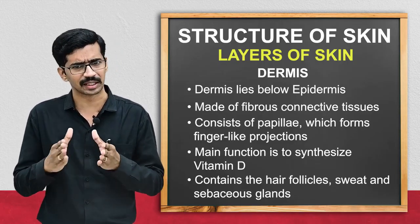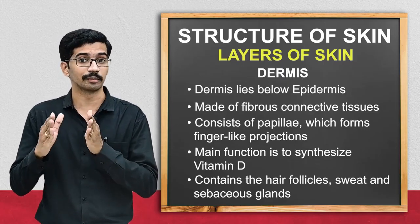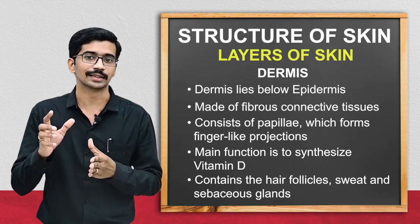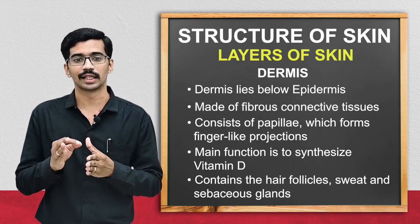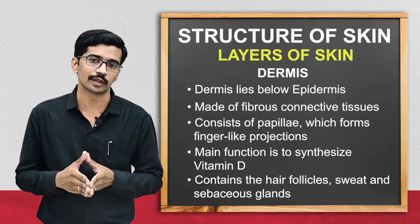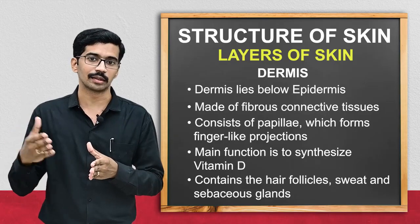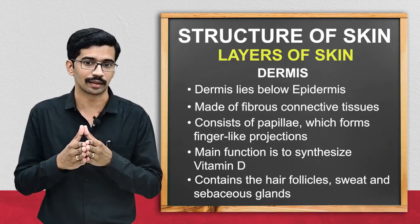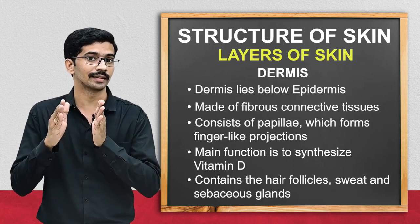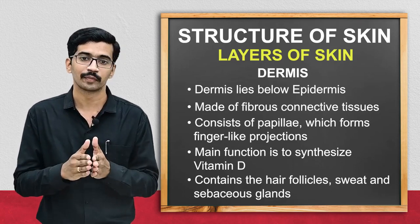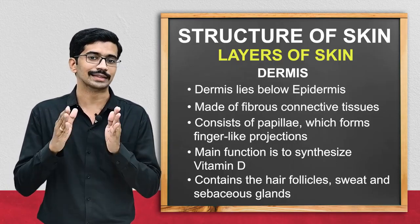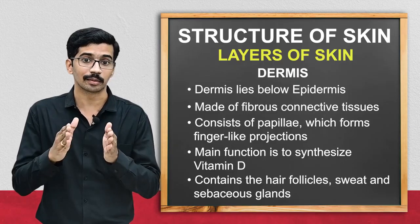The main function of the dermis layer is the synthesis of vitamin D. Whenever sunlight falls on our skin, a substance present in the skin — 7-dehydroxycholesterol — is converted into vitamin D. Apart from that, the dermis layer contains certain accessory structures of the skin, such as hair follicles, sweat glands, and sebaceous glands.